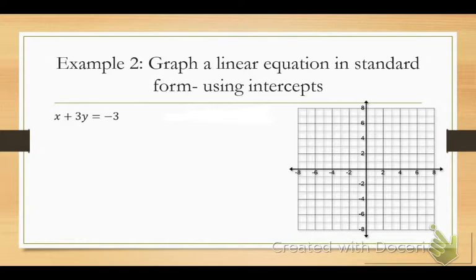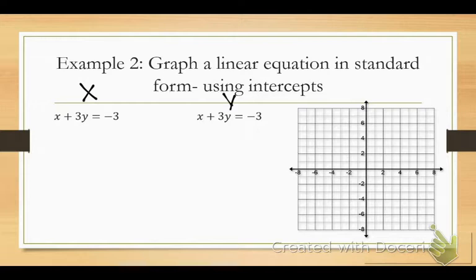You need to write the same equation a second time. Your book is not going to write it twice, but you need to know to write it twice, and here's why: on one of them you're going to find the x-intercept, and on the other one you're going to find the y-intercept. You use one equation to find x, and a second of the same equation to find your y-intercept.